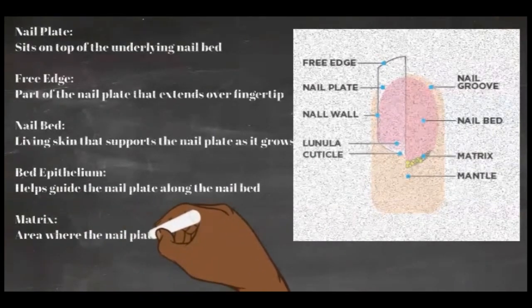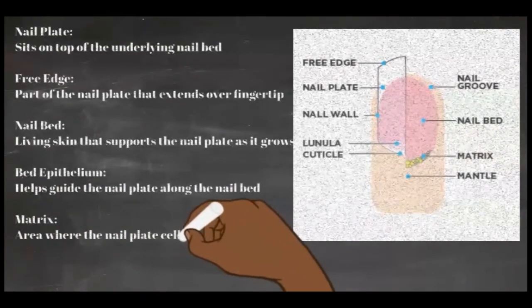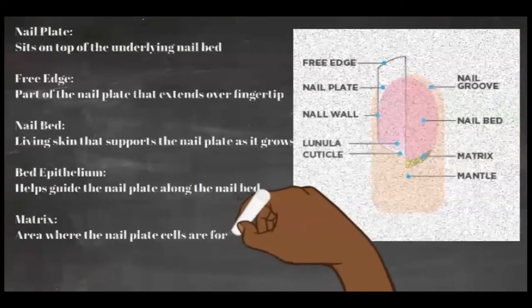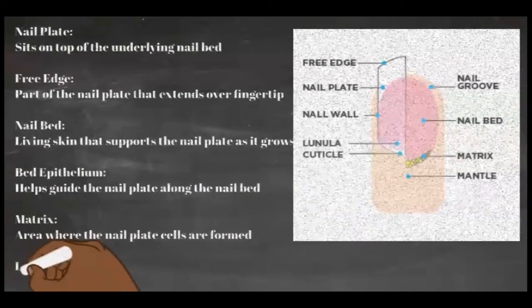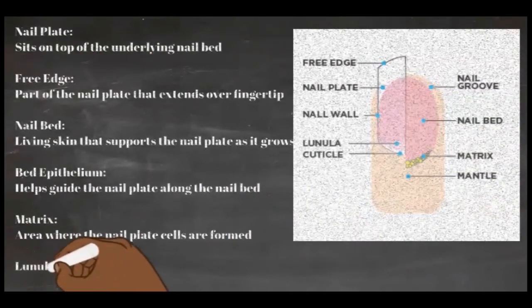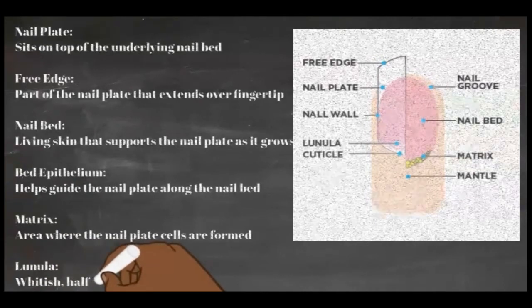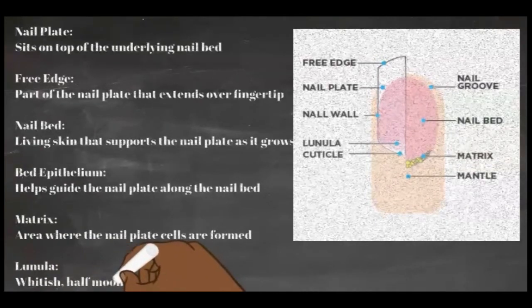The visible part of the matrix that extends from underneath the living skin is called the lunula. Not all lunulas can be seen — they are very short and remain hidden under the epithelium.